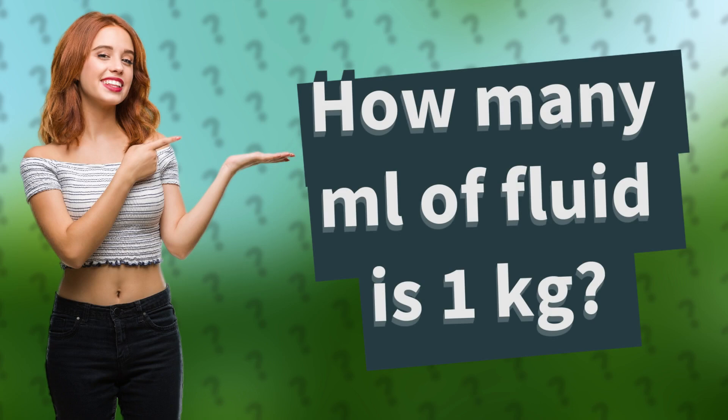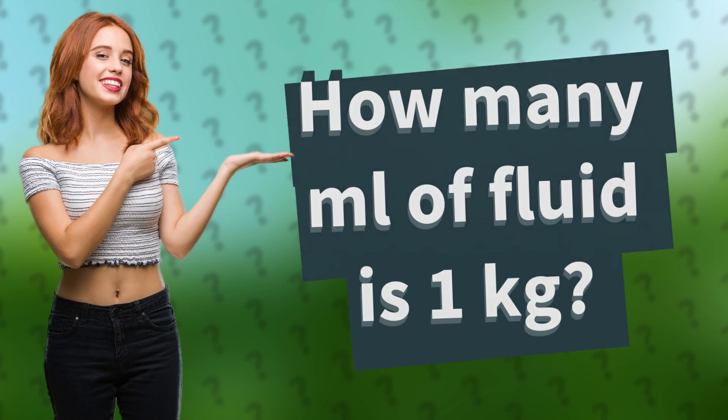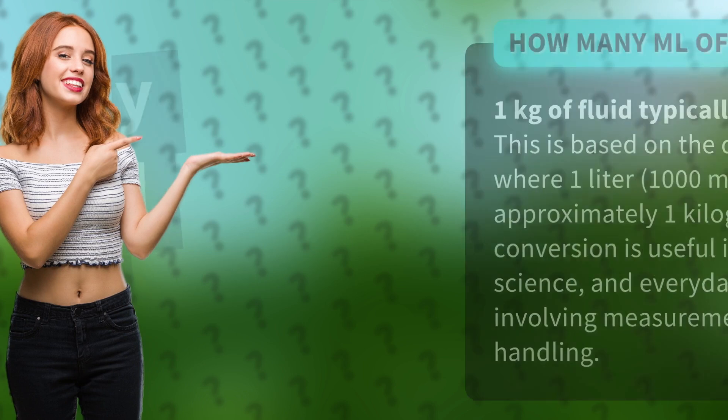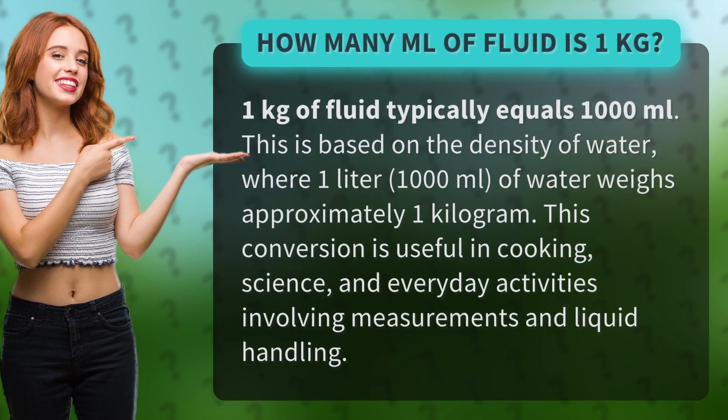How many ml of fluid is 1 kg? 1 kg of fluid typically equals 1,000 mL. This is based on the density of water, where 1 L, 1,000 mL, of water weighs approximately 1 kg.